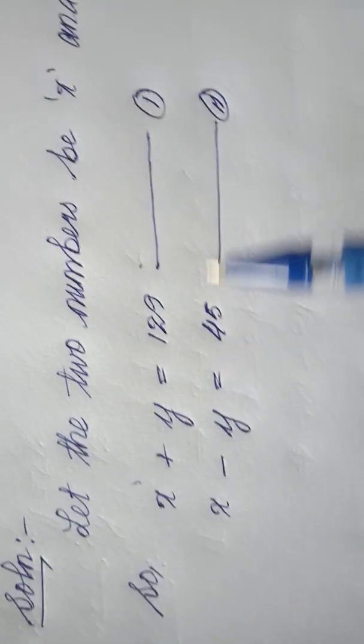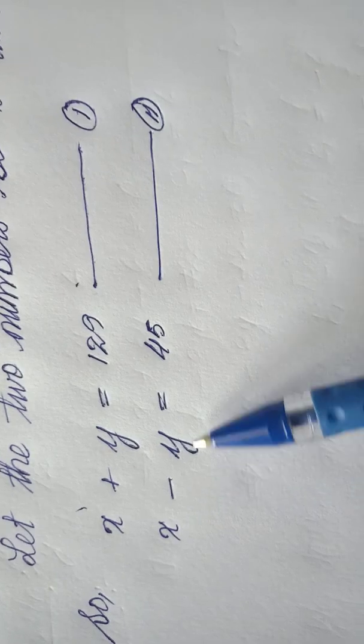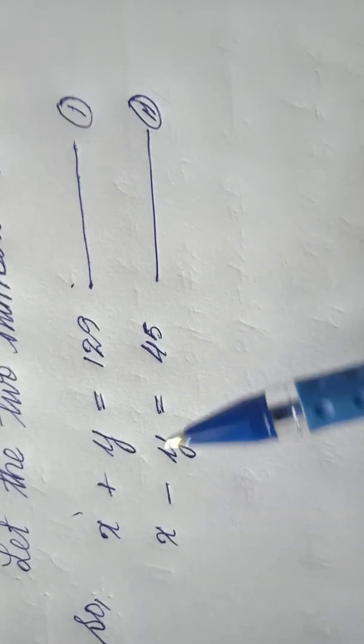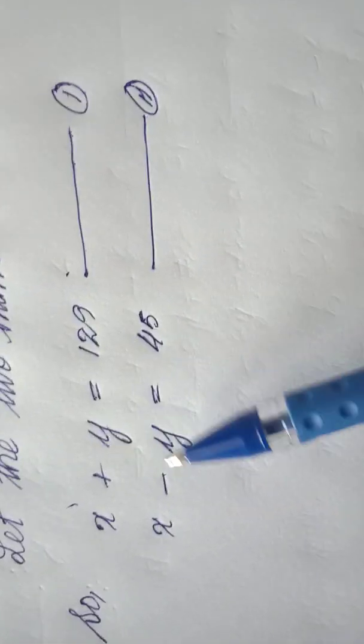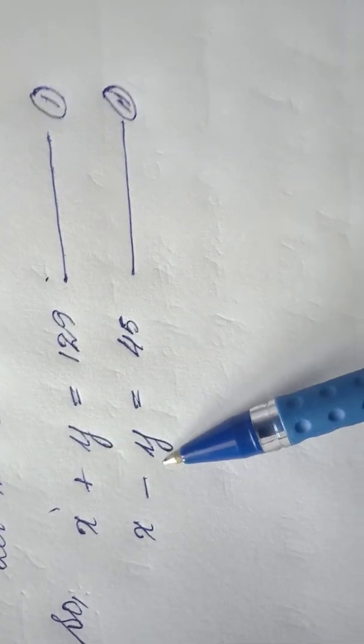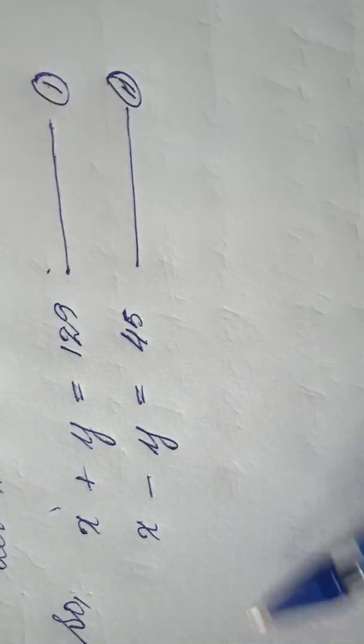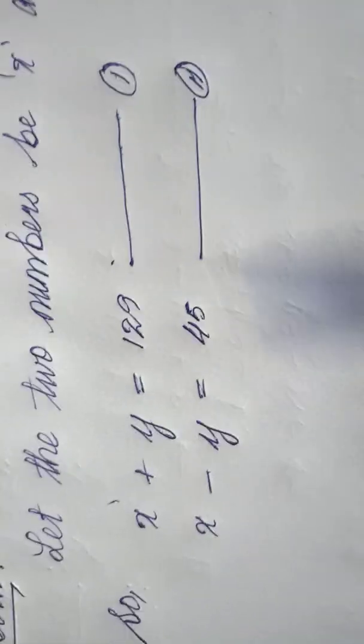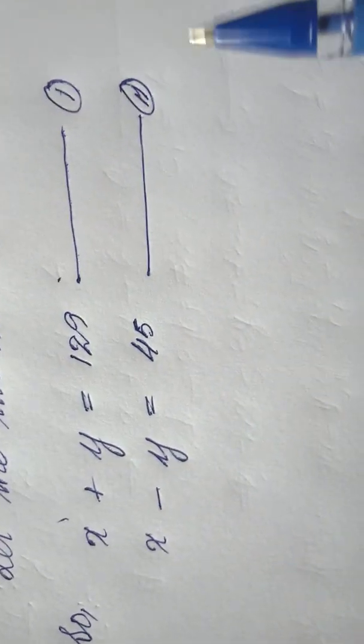By looking at the equations, it's very simple here because the y variables have opposite signs and the coefficients are also the same. That means I can use adding here. I can simply add equation one and two, then it will cancel each other and I can find the value of x.